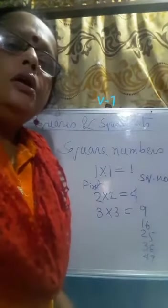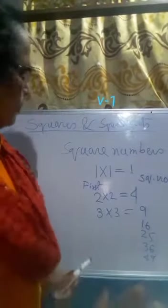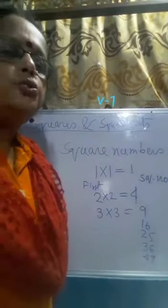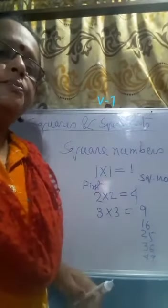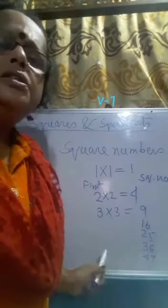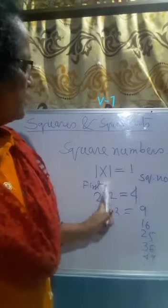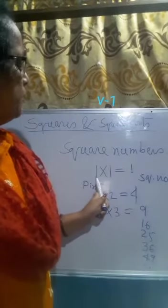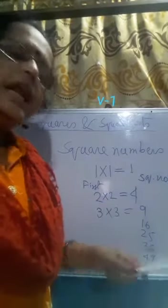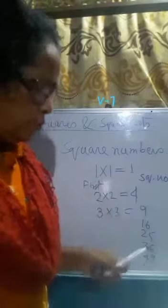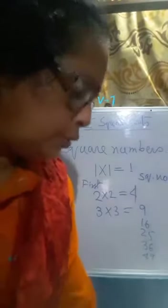Now, how can you identify the square numbers? In the set of natural numbers, not all numbers are square numbers. There are some square numbers in the set of natural numbers and we have to find those. There are many ways to find these square numbers. The easiest one is by multiplying a number by itself. Today, we will discuss the other two systems.